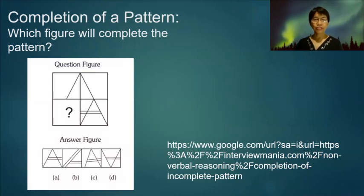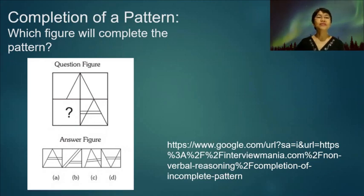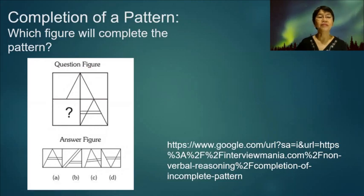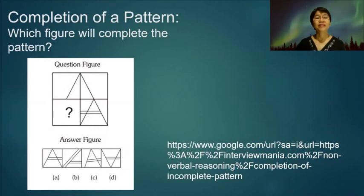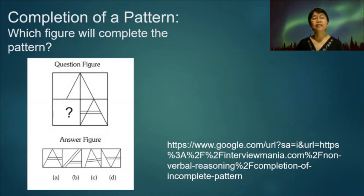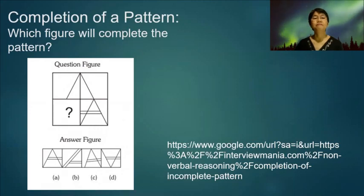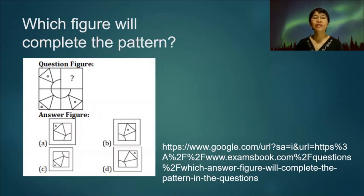Completion of a pattern is another type of abstract reasoning test. Which figure will complete the pattern? We have a whole figure with a missing part. We observe the pattern in the figure — there is a vertical line of symmetry, so we expect that whatever is on the right side will be reflected on the left side. The only figure that fits the reflection is letter A.